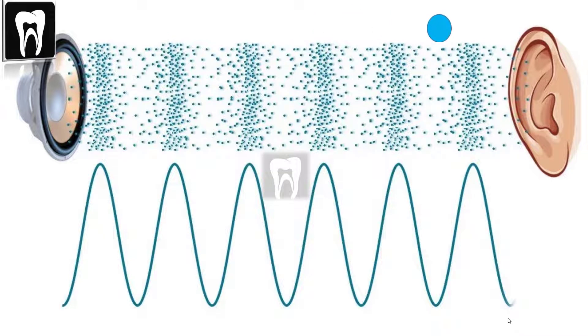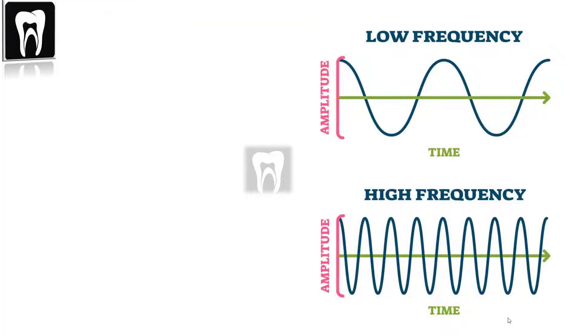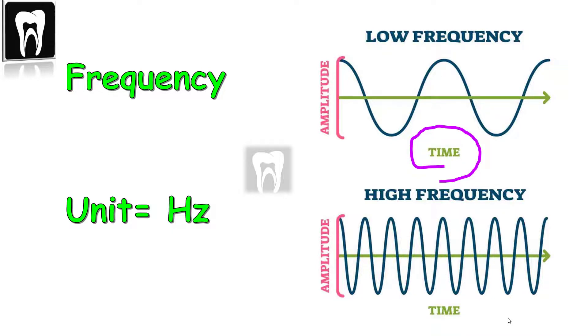The distance between each peaks in the wave is called the wave frequency. All vibrations have a frequency. Frequency is a measure of how often something vibrates per second. The unit of frequency is Hertz, the official symbol being H and Z, a capital H and a small z.